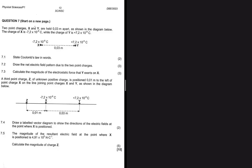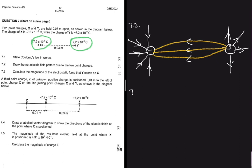What happens when you have a positive and a negative charge? We have two unlike charges, and they're definitely going to attract. So the answer to 7.2 will be something like the following — we're supposed to draw the net electric field pattern due to the two point charges.